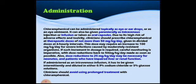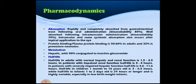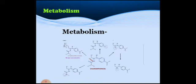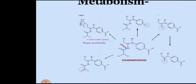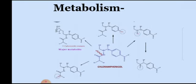The use of chloramphenicol should be avoided for prolonged treatment. Pharmacodynamically, it is completely absorbed from the gastrointestinal tract. The bioavailability is 80%, it is well tolerated, and it binds to plasma protein 50–60% in adults and 30% in premature neonates. The hepatic metabolism involves 90% conjugation to an inactive glucuronide. As seen in the diagram, the metabolic reaction is shown, with the major metabolic pathway shown on the left side.